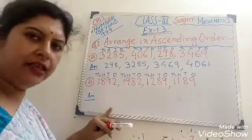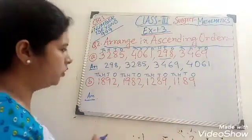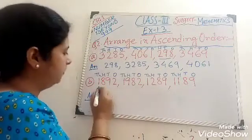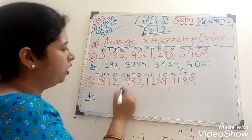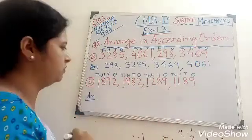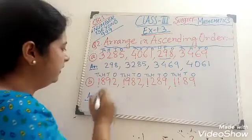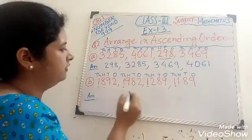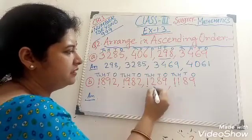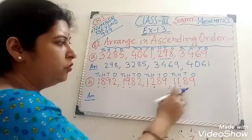Now in this case all the numbers are 4-digit numbers. So in the 1,000 place, all the numbers are the same — it means 1,000. Now come to the 100 place. In the 100 place, it is 8, it is 9, it is 2, and it is 1.